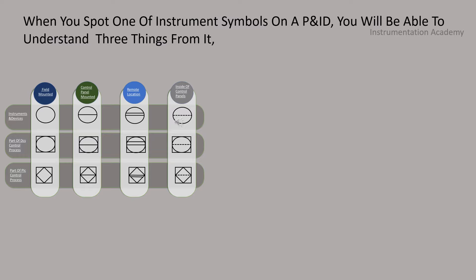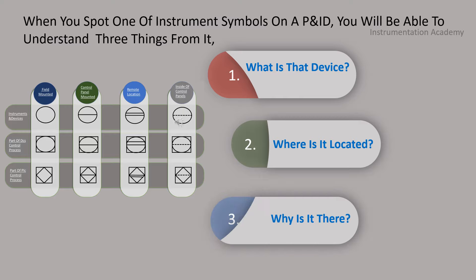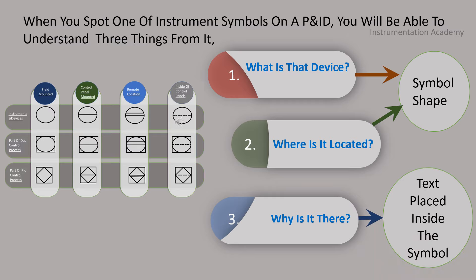When you spot one of these symbols on a P&ID, you will be able to understand three things from it. Number one, what is that device? Number two, where is it located? And number three, why is it there? The what and where aspects can be determined by the symbol shapes. The why part comes from the text placed inside the symbol. This text is known as instrument tag number.